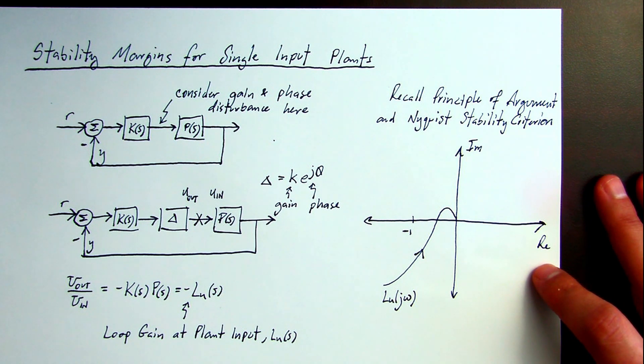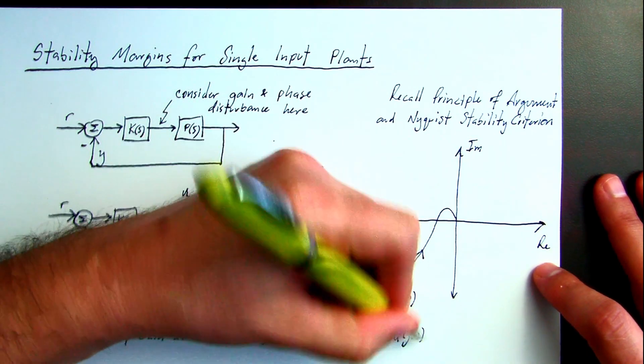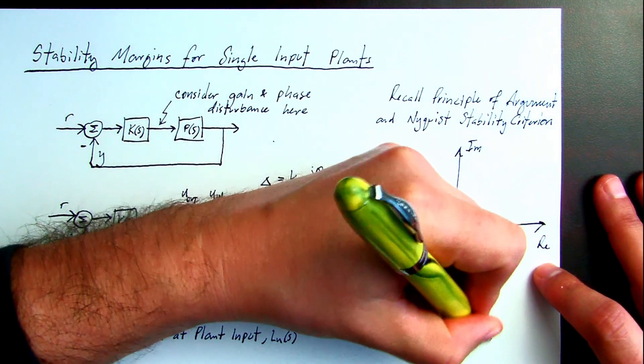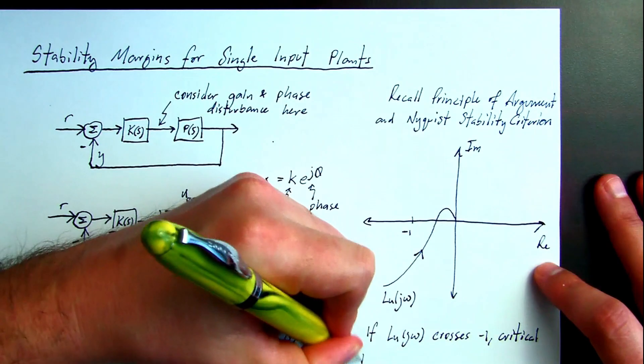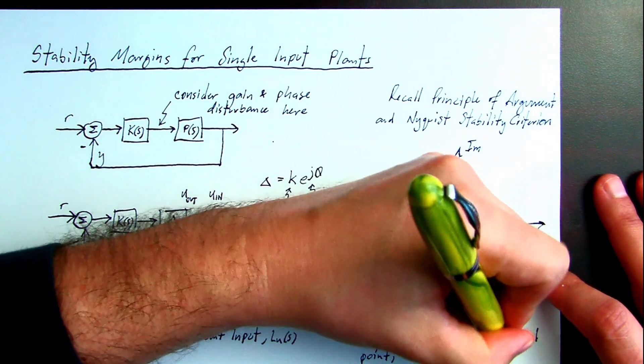So according to Nyquist, we're stable if the number of encirclements is equal to minus the number of open loop poles, where clockwise encirclements are positive and counterclockwise are negative.